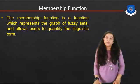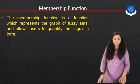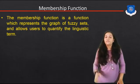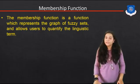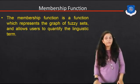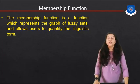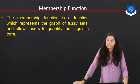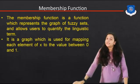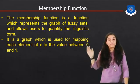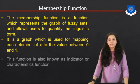We have studied different types of fuzzy sets in the last session, and we can derive the fuzzy union operation and fuzzy intersection operation. Now, what is the Membership Function? The Membership Function represents the graph of a particular fuzzy set. It is the graph used for mapping each element of X to a value between 0 and 1.